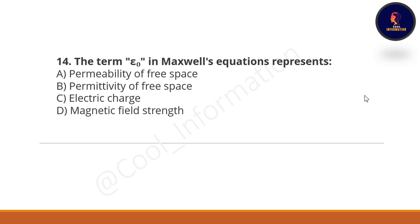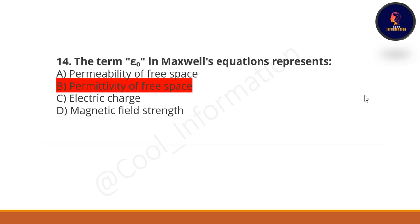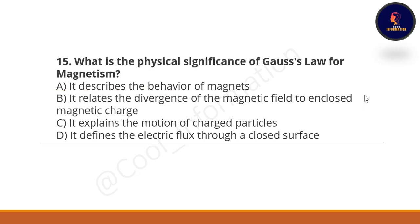Next question: the term ε₀ in Maxwell's equations represents what? Option A: permeability of free space. Option B: permittivity of free space. Option C: electric charge. Option D: magnetic field strength. The correct option is B — permittivity of free space.